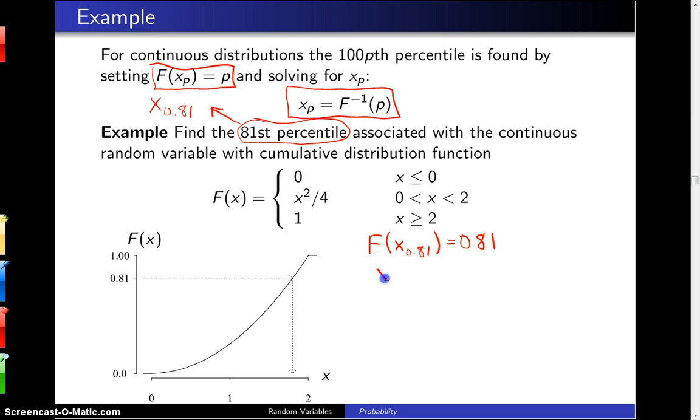So in this case, x sub 0.81 squared divided by four from up here is the cumulative distribution function, and that gets set to 0.81.